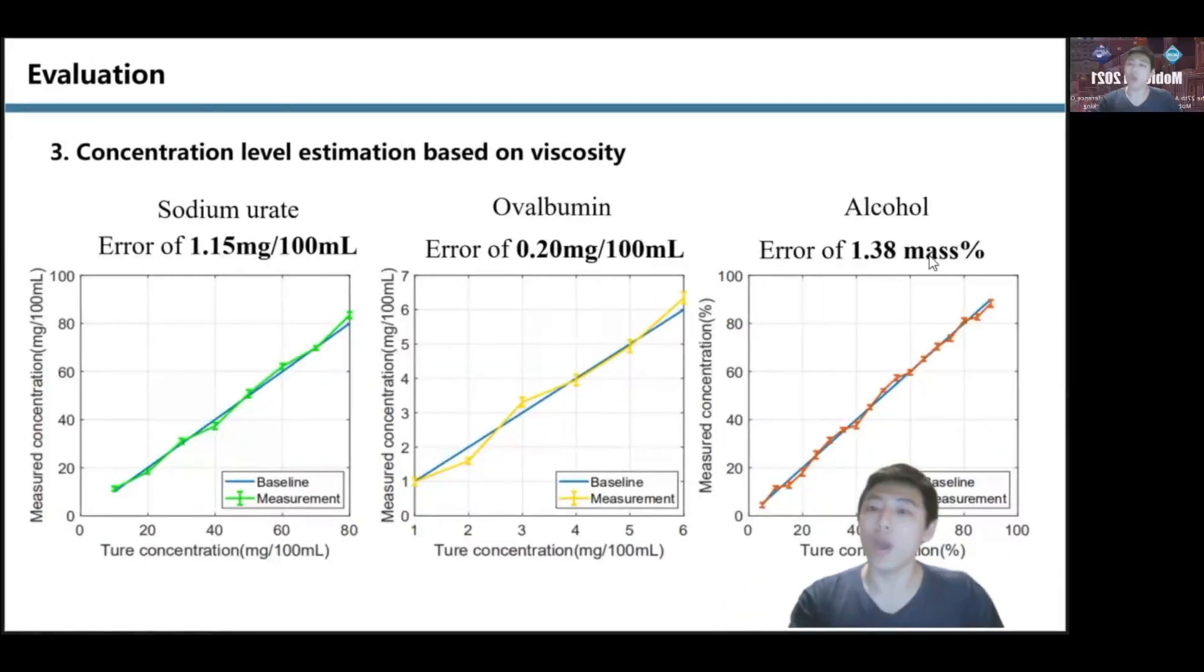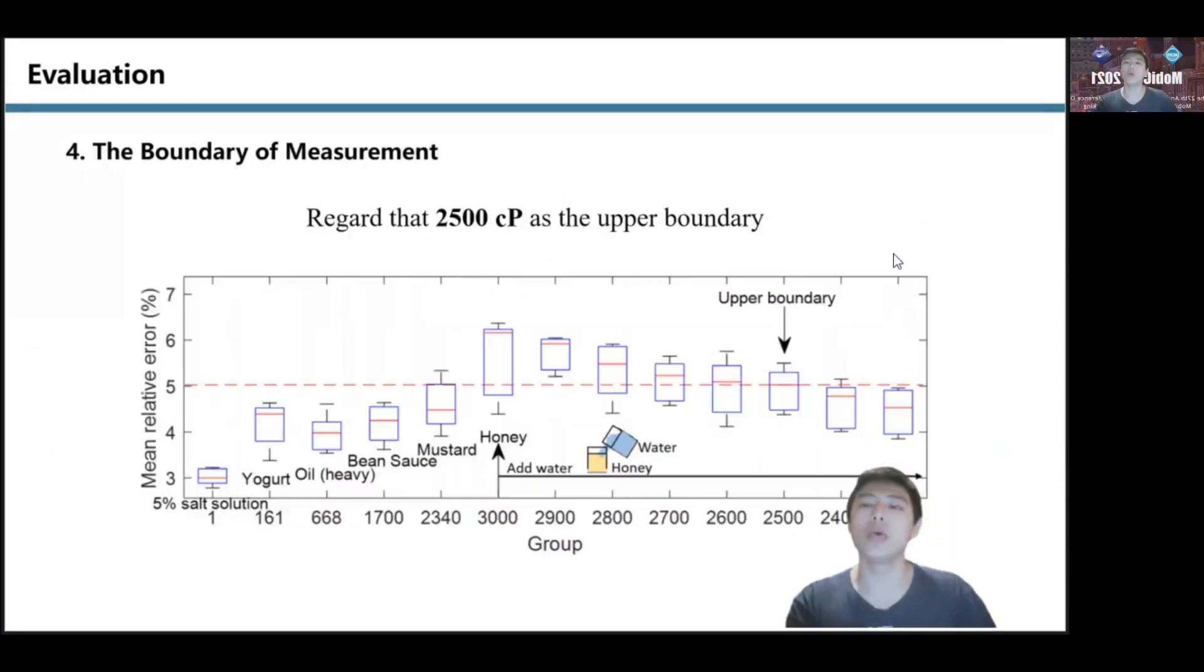We can also measure certain liquids' concentration levels even when the amount is very small, such as sodium urine, ovum, and alcohol. We define the measurable upper boundary as the time when the estimation error exceeds 5%. We can get the upper boundary as 2,500 cP.